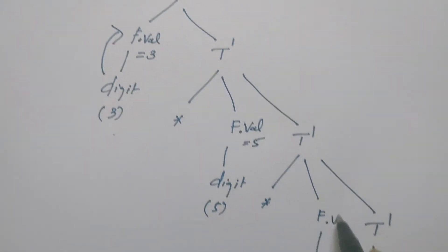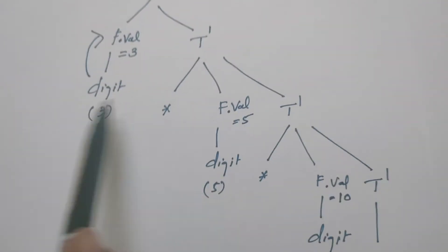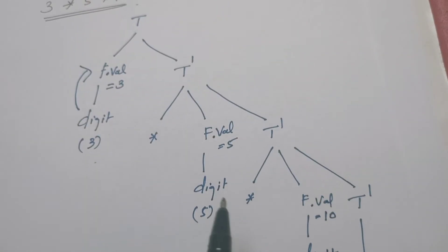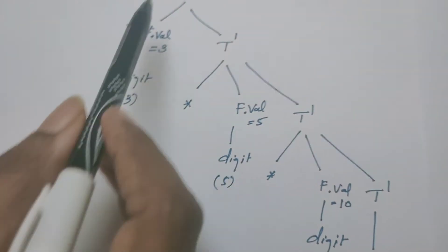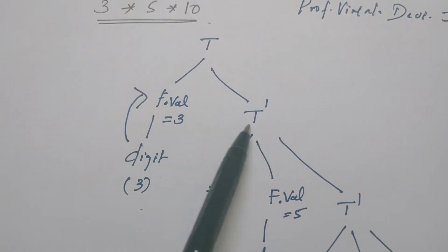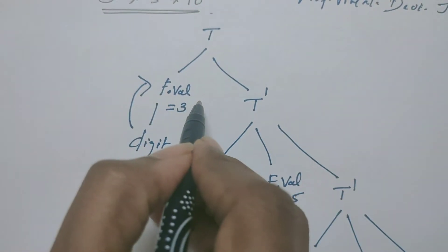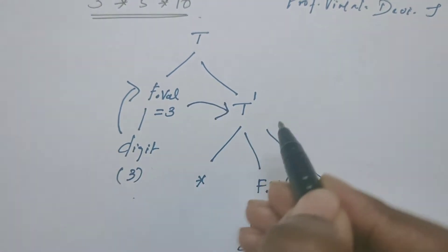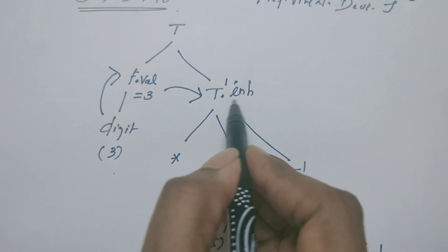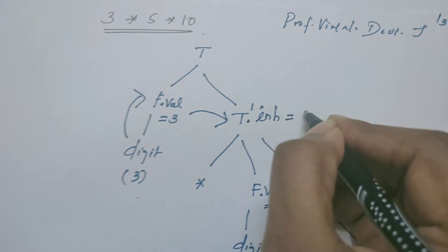Here F takes value 5, and in this case it is 10. Now all these nodes have their corresponding attributes initialized with values. Once F takes a value, its sibling T' — since T derives F T' — once F gets a value, it is passing the value to its sibling. I am calling this variable name as INH, meaning inherited, because it is inheriting the value from its sibling. Its value is now 3.